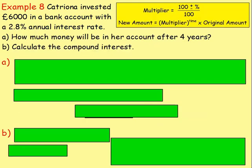Let's go with an example — example eight on multipliers. The first seven examples have been in the previous two multiplier lessons. Katrina invested £6,000 in a bank account with a 2.8% annual interest rate. How much money will be in her account after four years? And then part B, calculate just the compound interest. We are wanting to work out how much money is going to be in her account, and we can see that the interest rate is 2.8%, which means for that first year she'll get 2.8% of the £6,000.